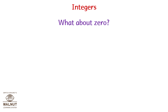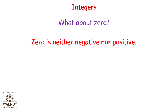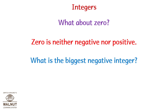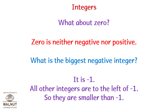Integers again. What about zero? Zero is neither negative nor positive. What is the biggest negative integer? It is minus one. All other integers are to the left of minus one, so they are smaller than minus one.